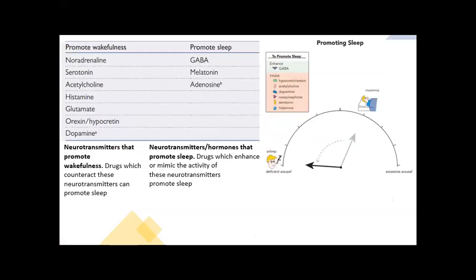Neurotransmitters that promote wakefulness include noradrenaline, serotonin, acetylcholine, histamine, glutamate, orexin, and dopamine. Drugs which counteract these neurotransmitters can promote sleep. Neurotransmitters or hormones that promote sleep include GABA, melatonin, and adenosine. Drugs which enhance or mimic the activity of these neurotransmitters also promote sleep.